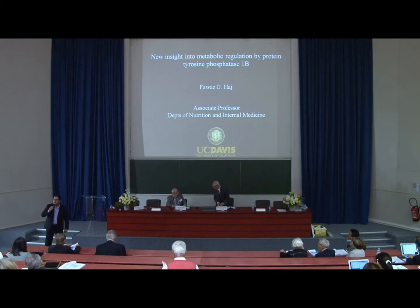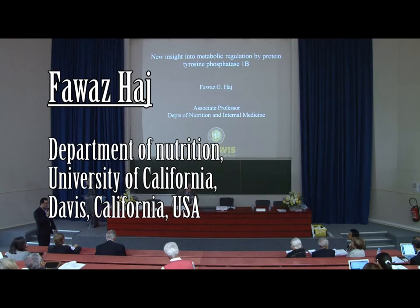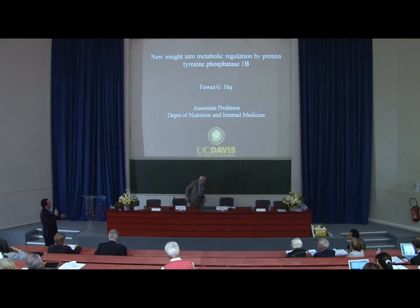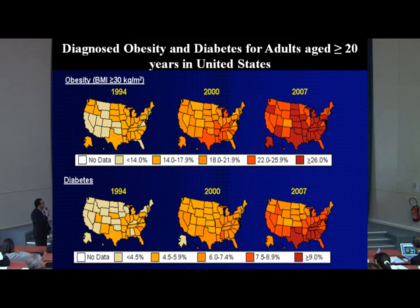I want to thank the organizers for giving me the opportunity to present some of our latest work. We saw yesterday a slide from Billy showing the prevalence of metabolic disease and obesity worldwide. This is a map of the US, a heat-colored map showing the increased incidence of obesity in the US.